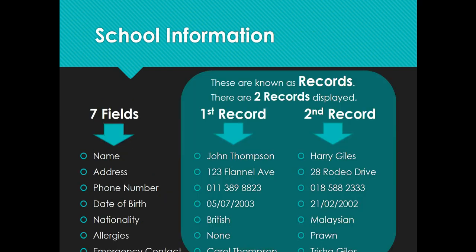The next thing we can look at is records. One student would be one record. For example, the first student we have is John Thompson, who lives at 123 Flannel Avenue — with his phone number, date of birth, nationality, allergies, and emergency contacts. These seven fields together make up one record — John's whole file is one record. We also have a second student, Harry Giles, on Rodeo Drive with his telephone number — that is our second record. It's very important to understand the difference between a field, which is the name or address, and a record, which is the information put into those fields.